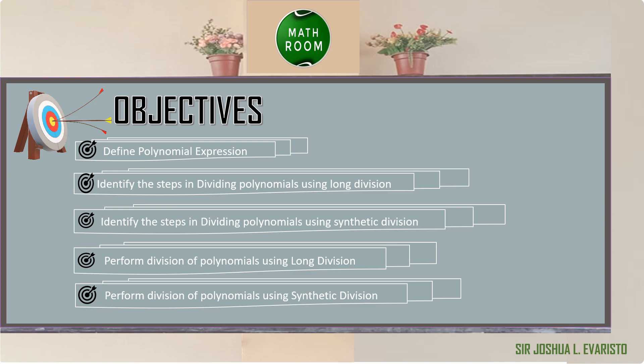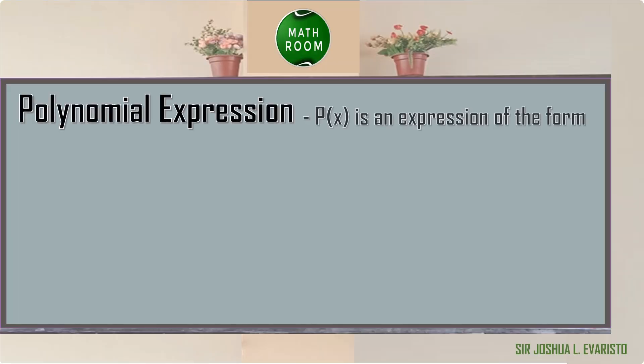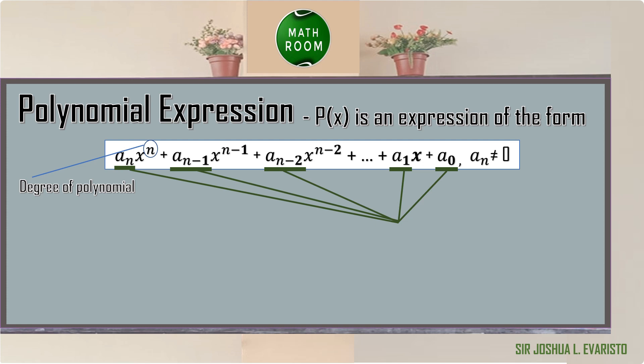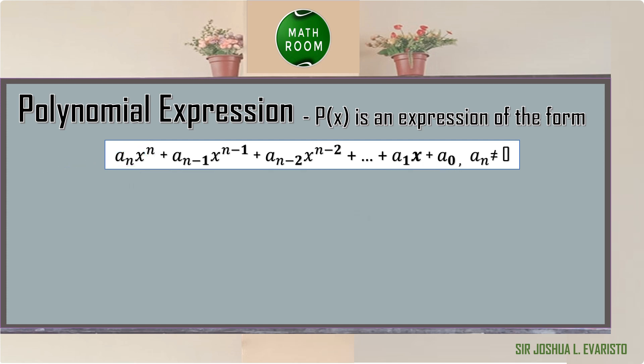Let's get started. A polynomial expression p of x is an expression of a standard form, where the non-negative integer n is what we call the degree of the polynomial, and the coefficients a sub 0, a sub 1, until a sub n are real numbers.